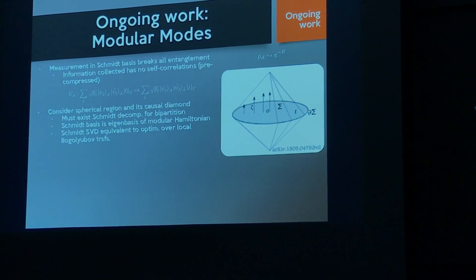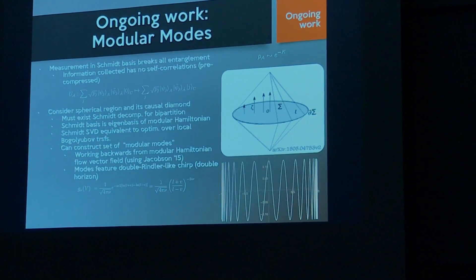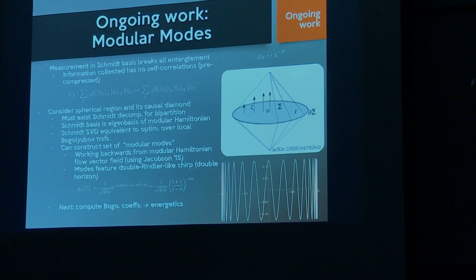The Schmidt basis is necessarily the eigenbasis of the modular Hamiltonian — the modular Hamiltonian is like the log of the reduced density matrix. The singular value decomposition for the Schmidt decomposition is like optimizing local Bogoliubov transformations, and in quantum field theory, Bogoliubov transformations are a change of basis of modes. Working backwards from recent work by Jacobson, we constructed Schmidt basis modes. In the Rindler case with one horizon, there's a chirp near the horizon that redshifts. Here with two horizons, we get a double chirp, with geometric intuition from path intervals.